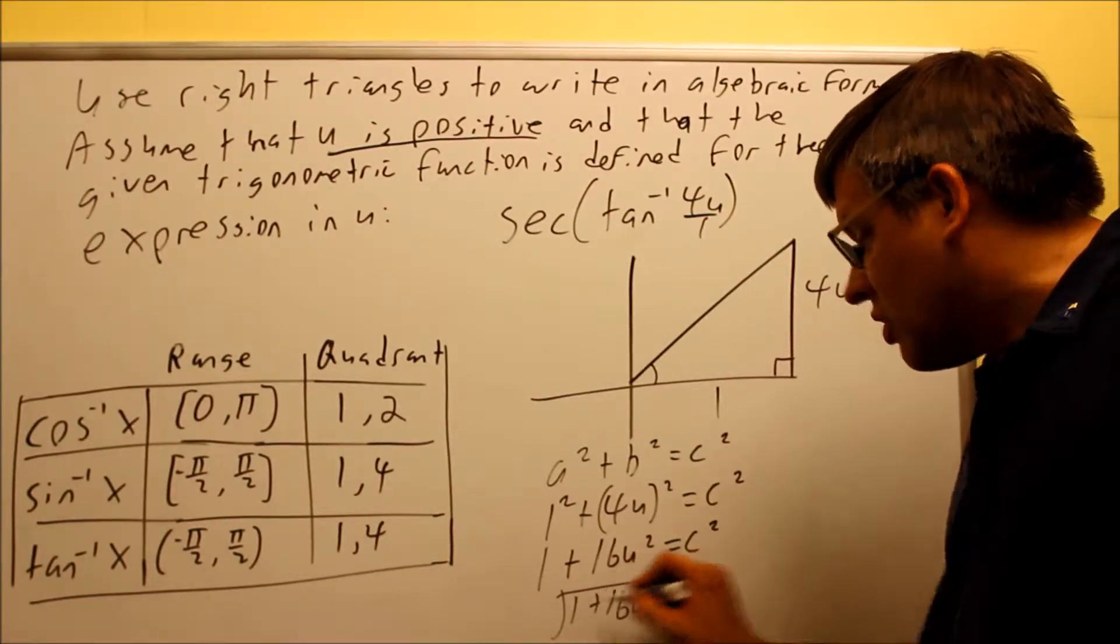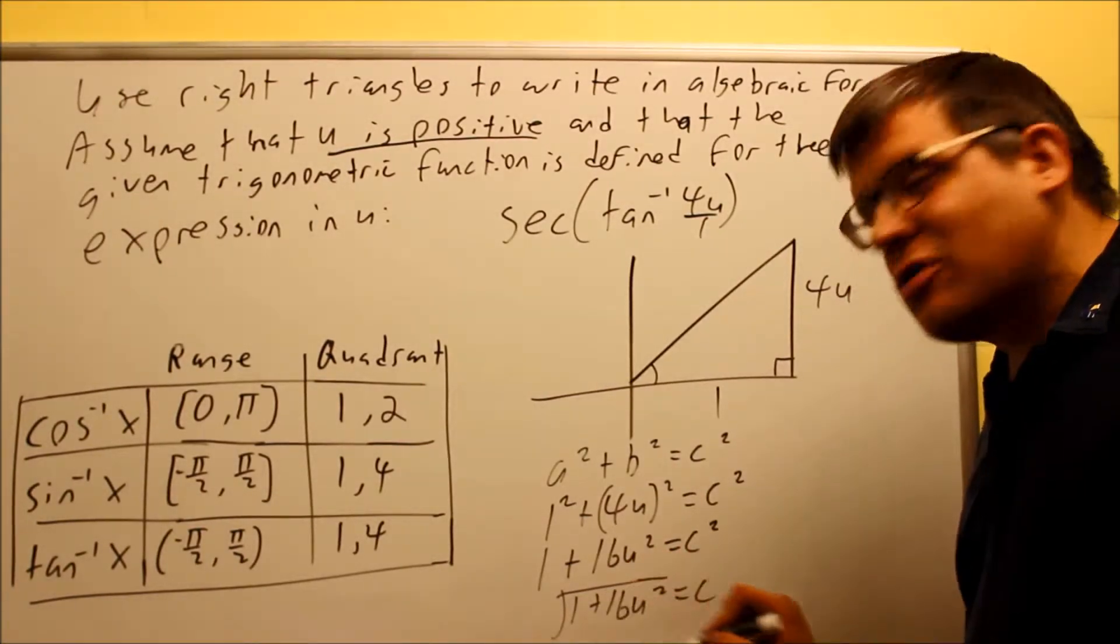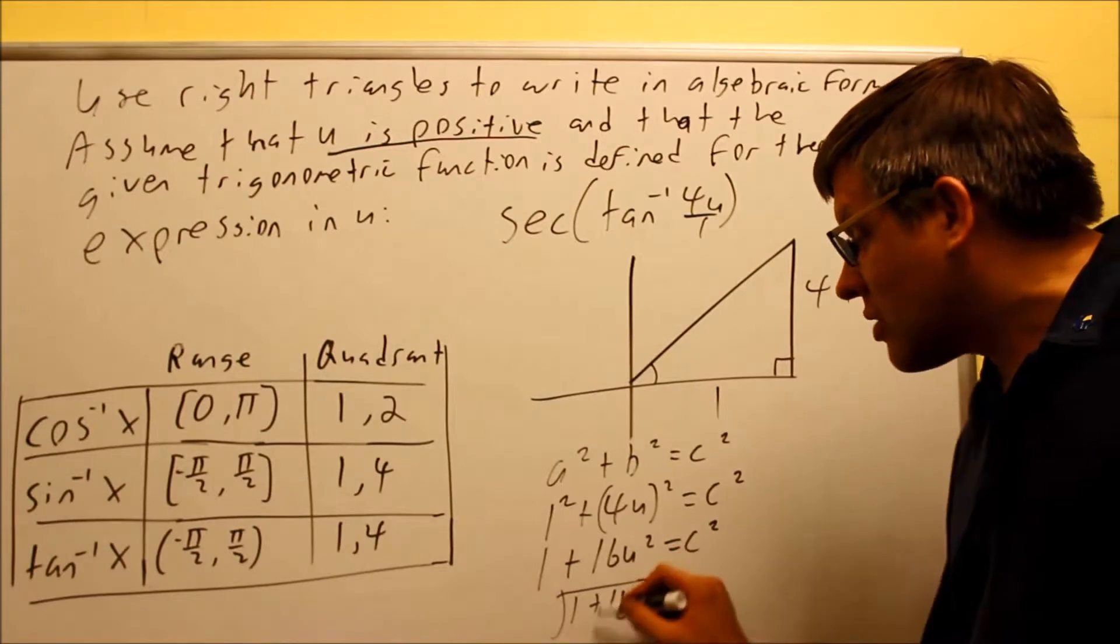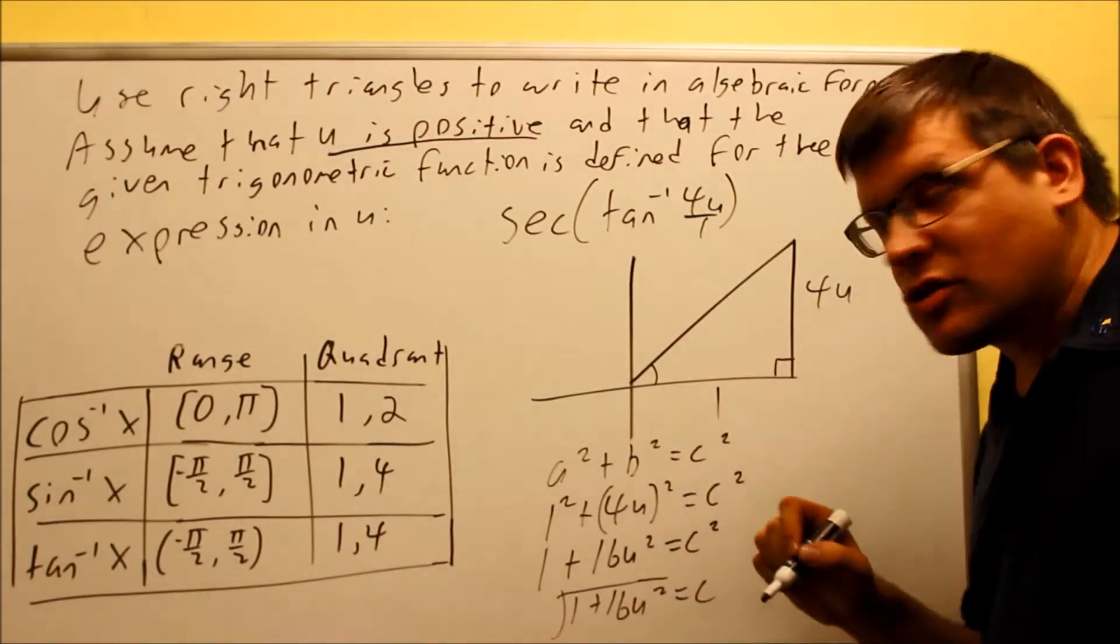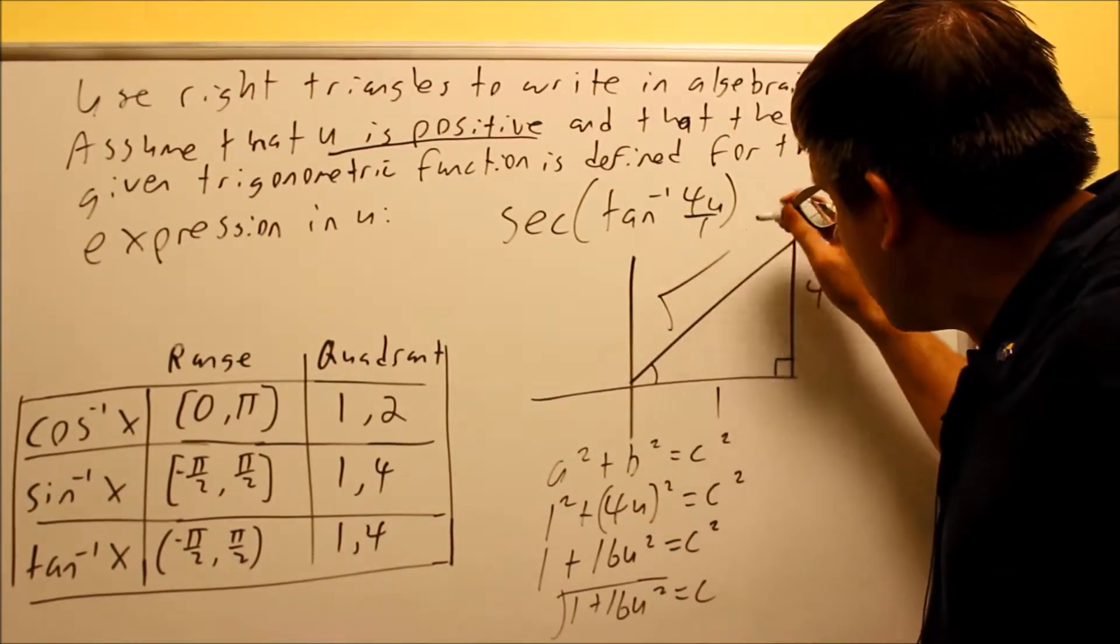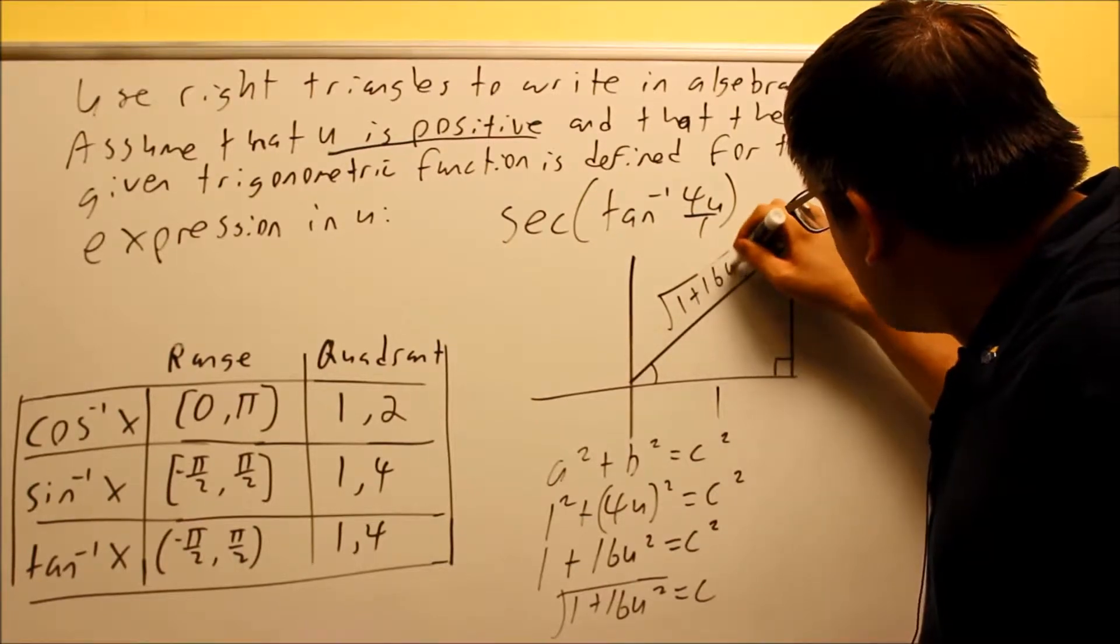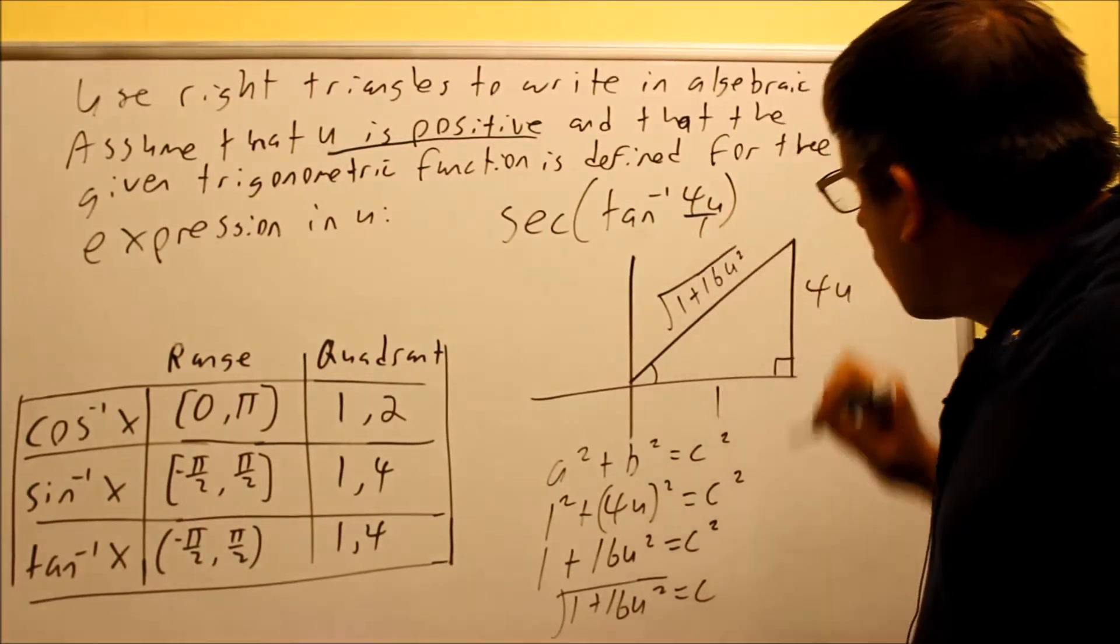So square root of 1 and square root of 16, you can't do those separately because you've got a plus or minus sign. So anytime you have a plus or minus sign separating those, you're not allowed to simplify that further. So that means that this whole thing here is square root of 1 plus 16U squared.